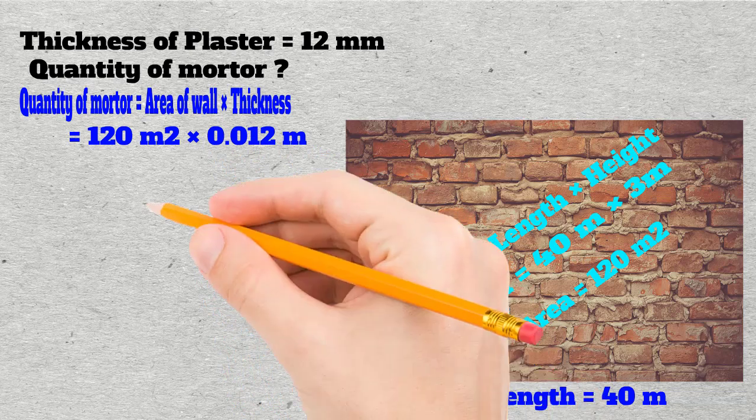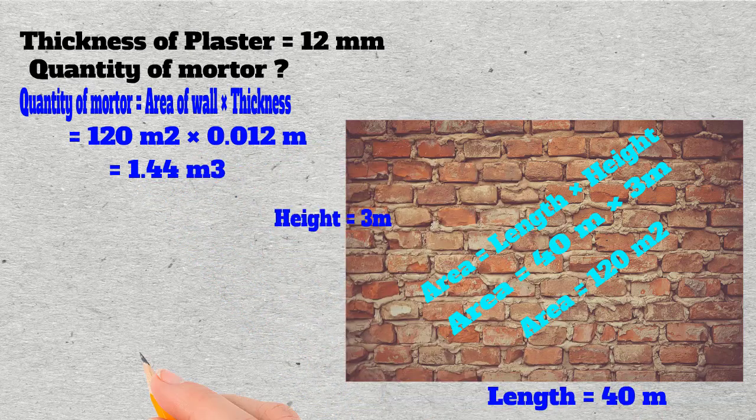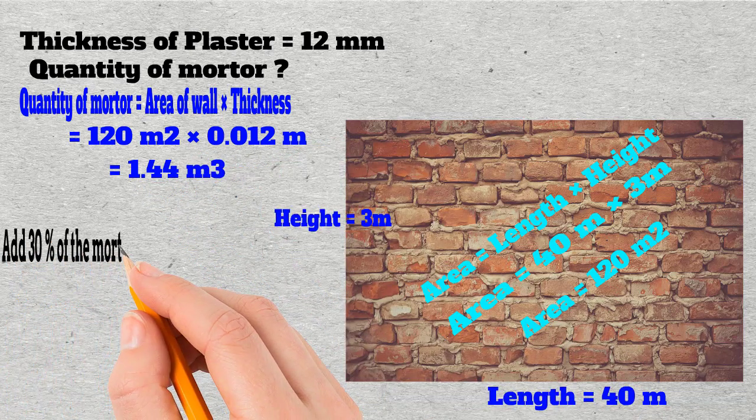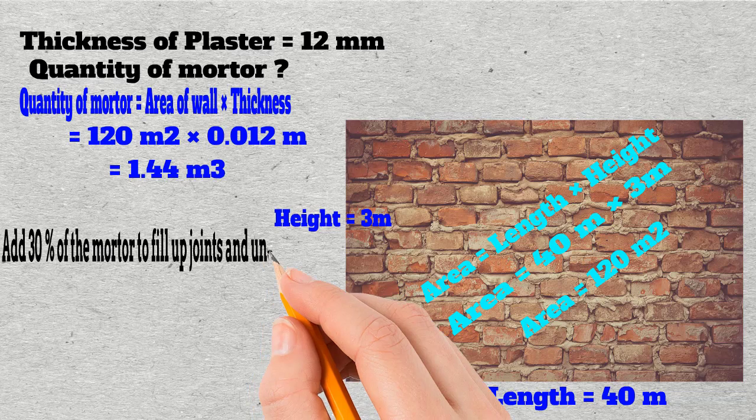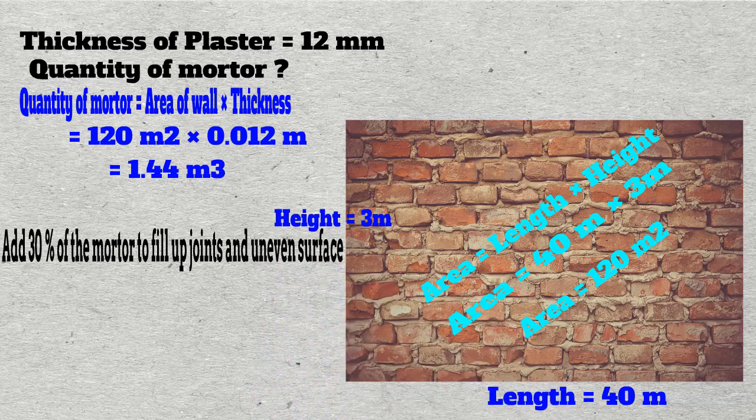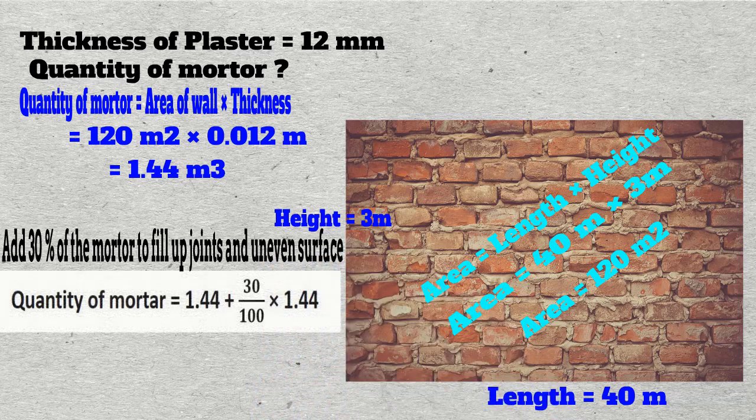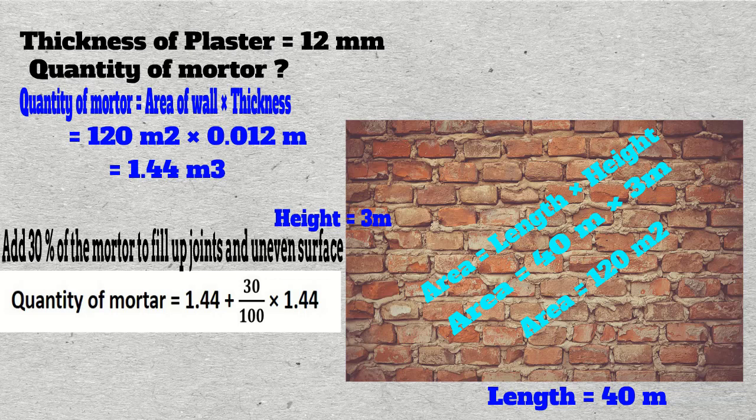Add extra 30% of the mortar to fill up the joints and uneven surface. The quantity of mortar is equal to 1.44 plus 30 divided by 100 multiplied by 1.44. By calculation, we get 1.872 cubic meters of the mortar. We have calculated the wet quantity of the mortar.